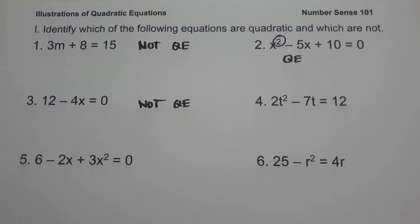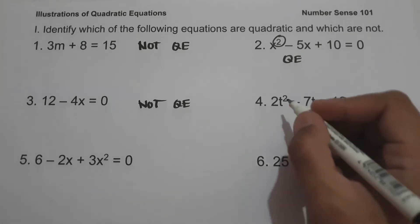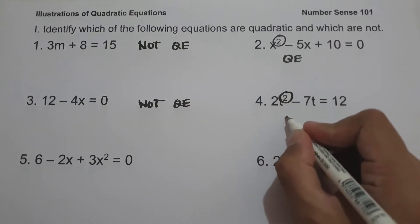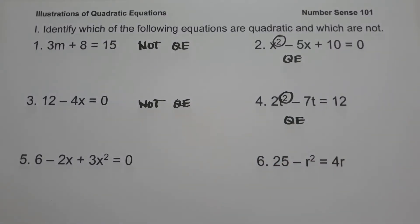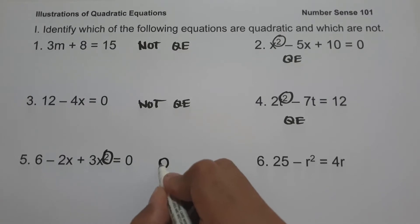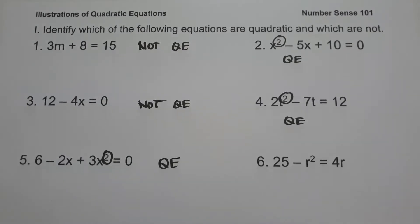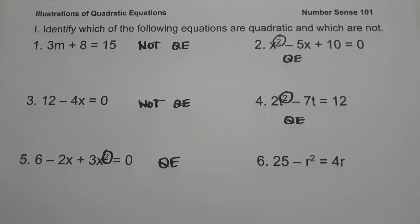On number four, we have 2t squared minus 7t equals 12. The highest exponent is two, so this is a quadratic equation. On number five, we have 6 minus 2x plus 3x squared equals zero. Number five is not written in standard form, but the highest exponent is still two, so this is a quadratic equation.